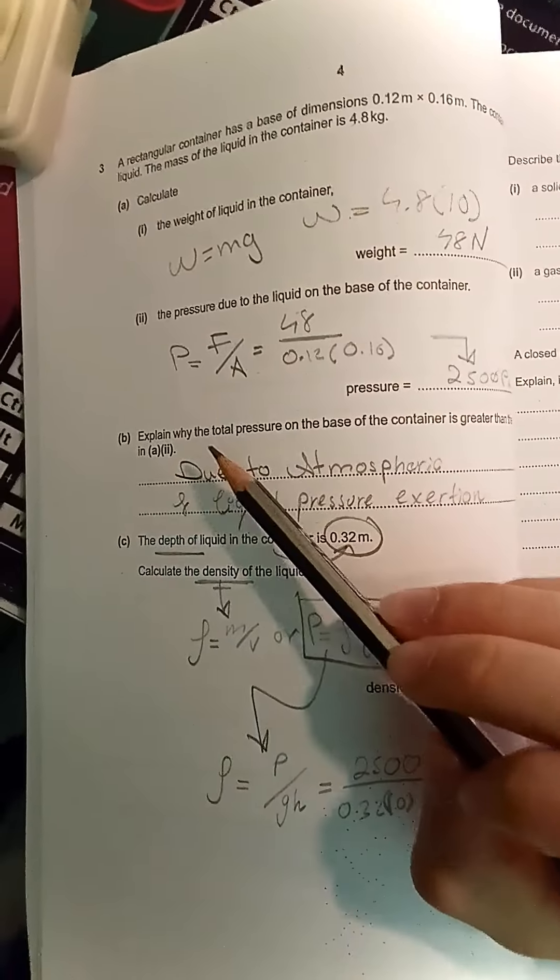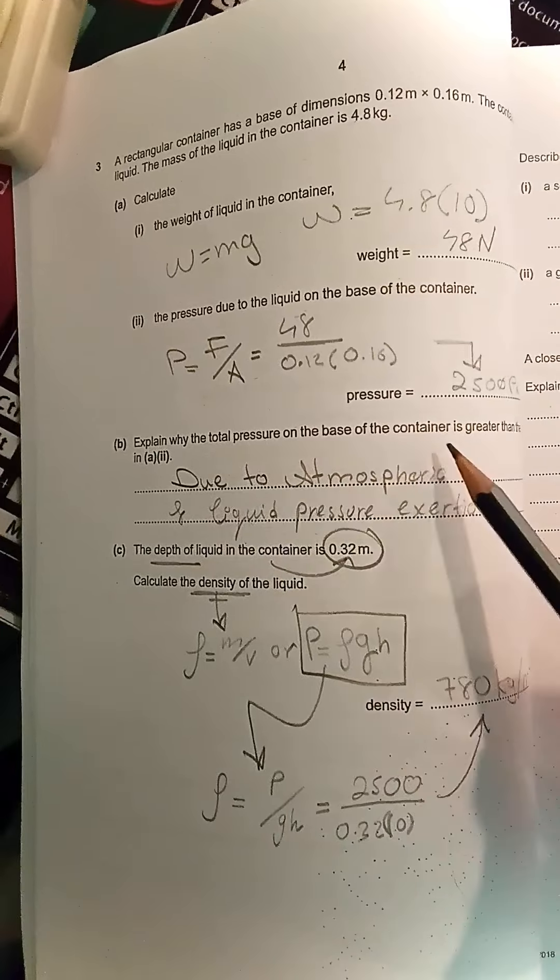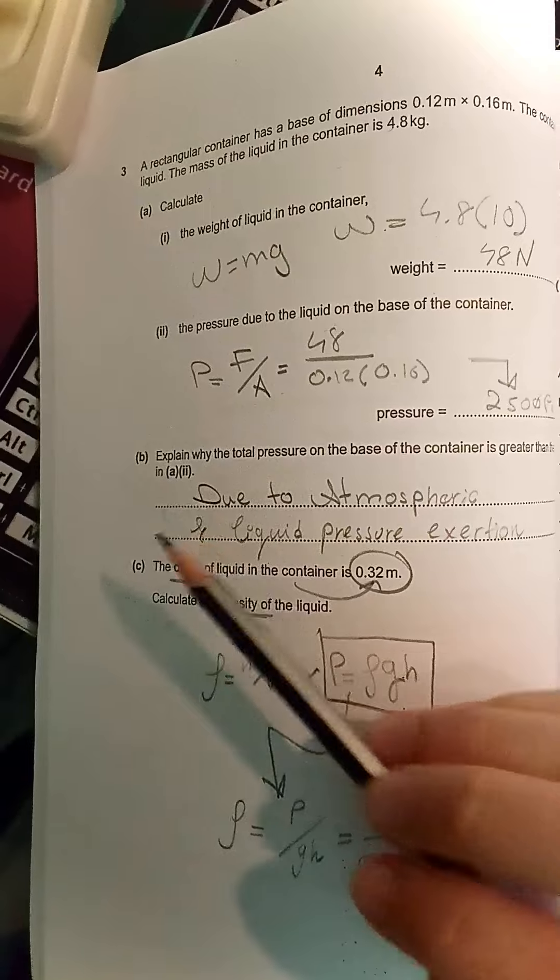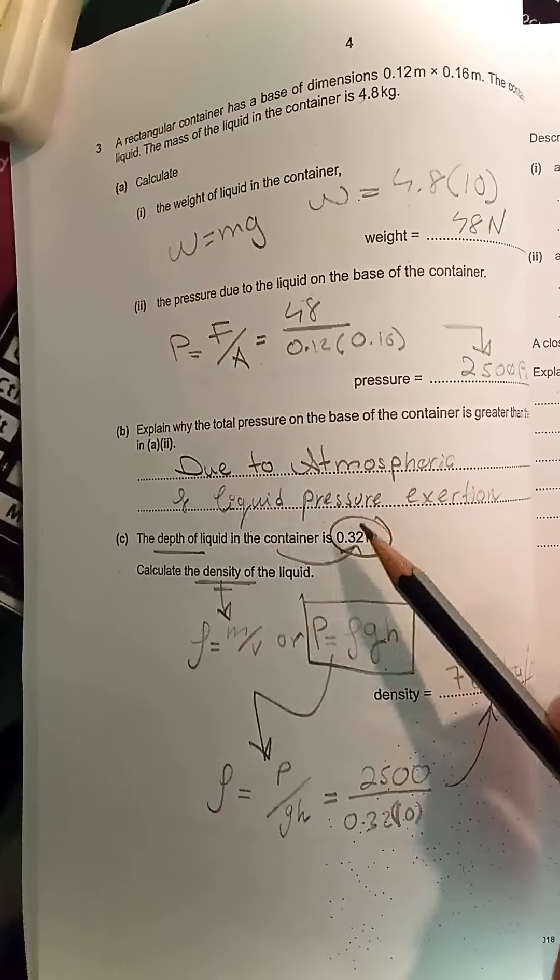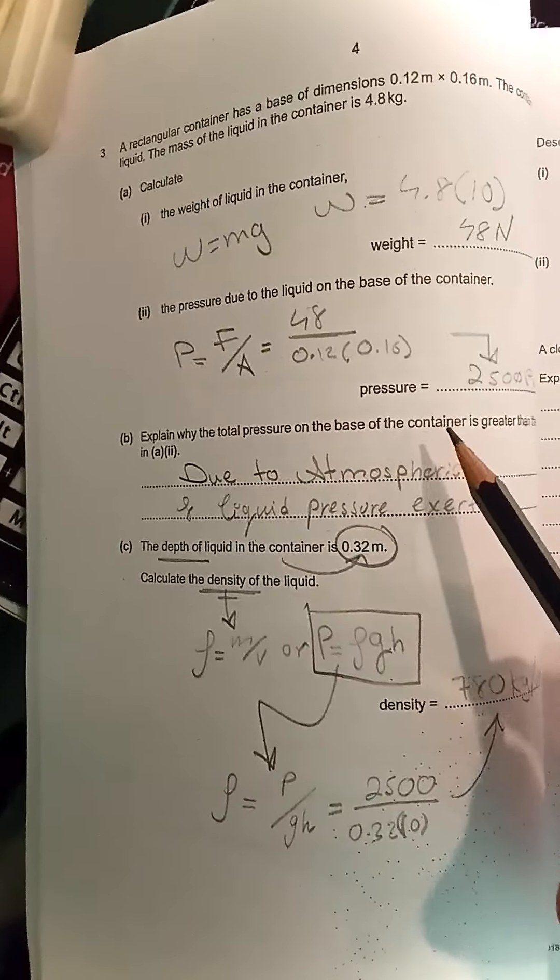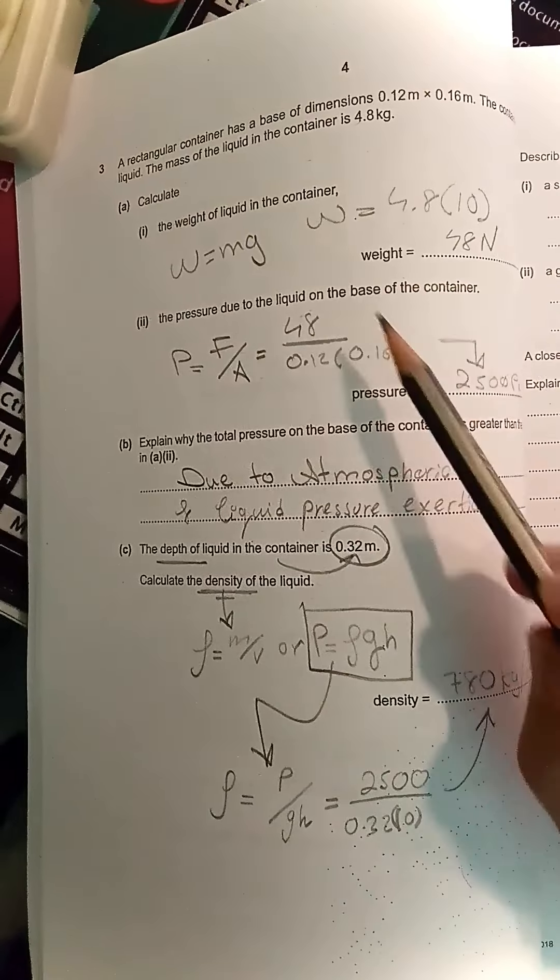Part B: Explain why the total pressure on the base of the container is greater than the value calculated in part A. This is due to atmospheric pressure in addition to liquid pressure, which causes the total pressure at the base to be greater.